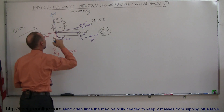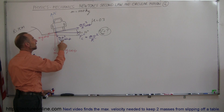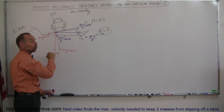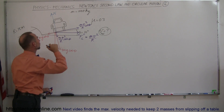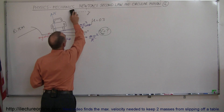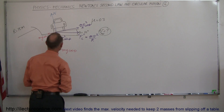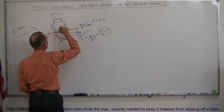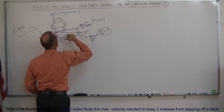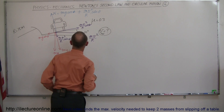The normal force pushes back against both the mg cosine theta component and the mv²/R times sine theta component — both of these are pushing the car into the surface, and the surface pushes back. So the normal force equals mg cosine theta plus mv²/R times sine theta.